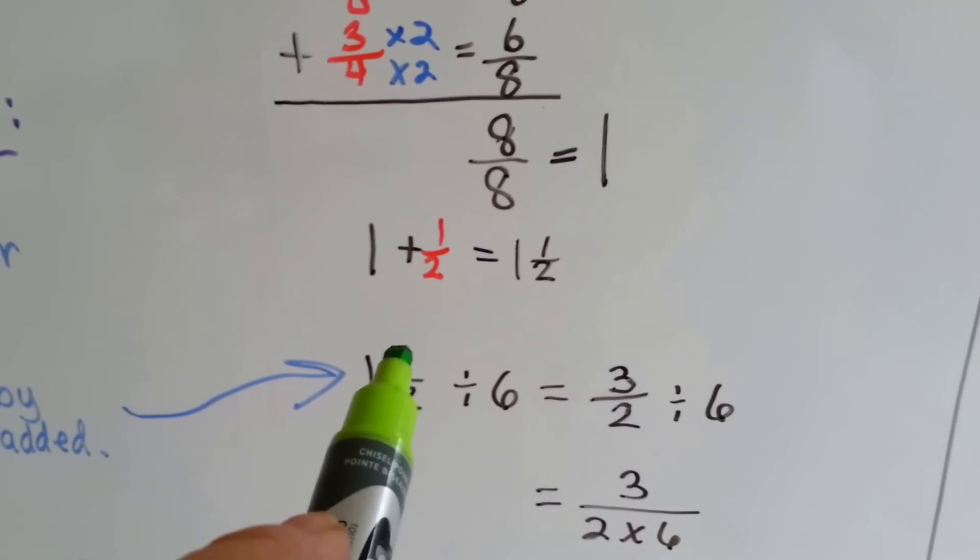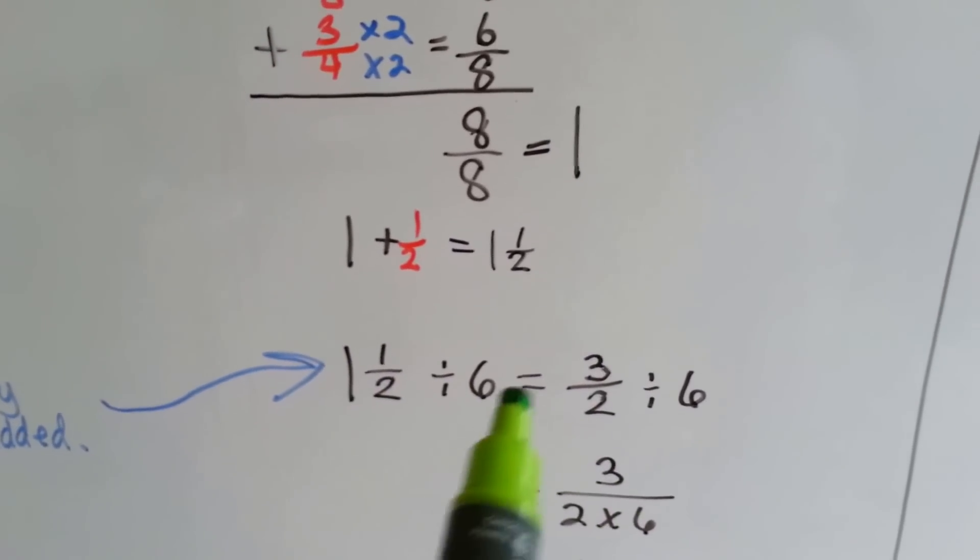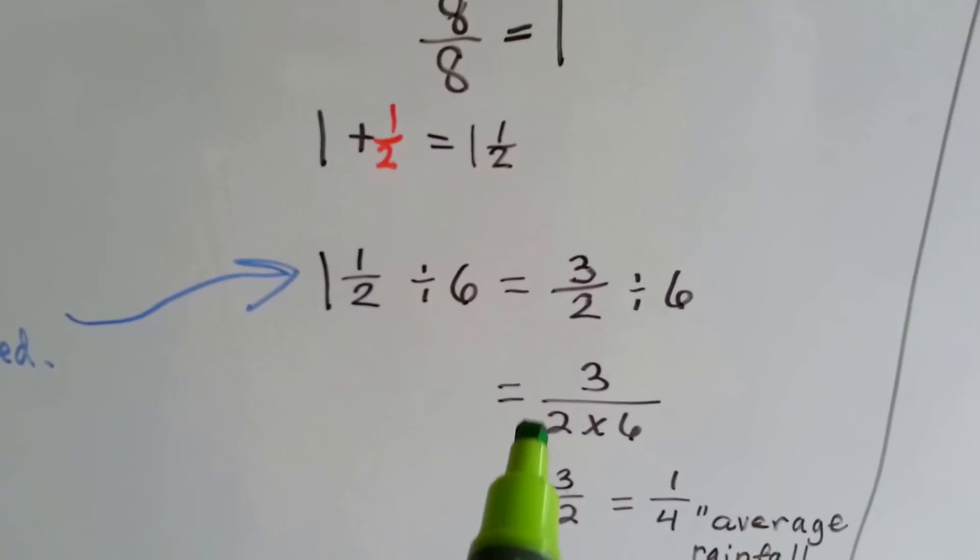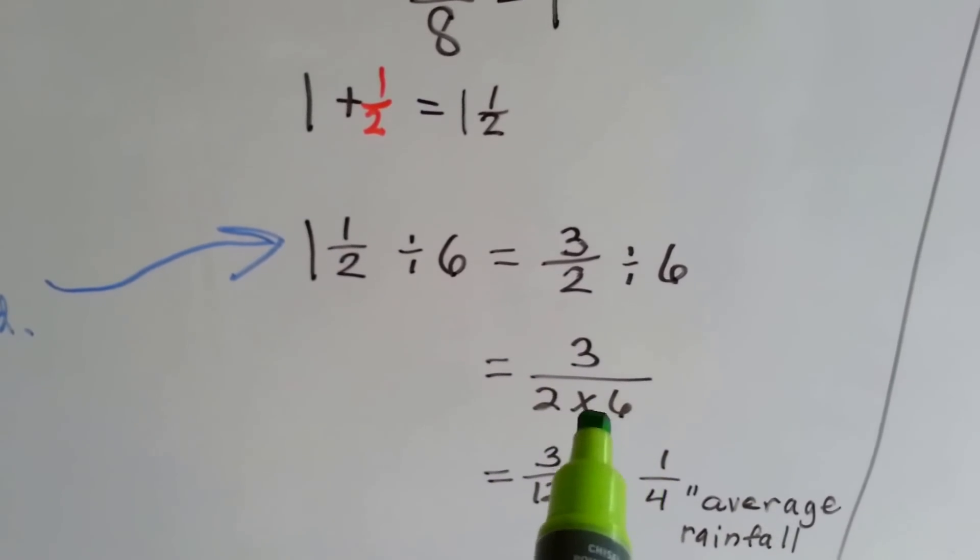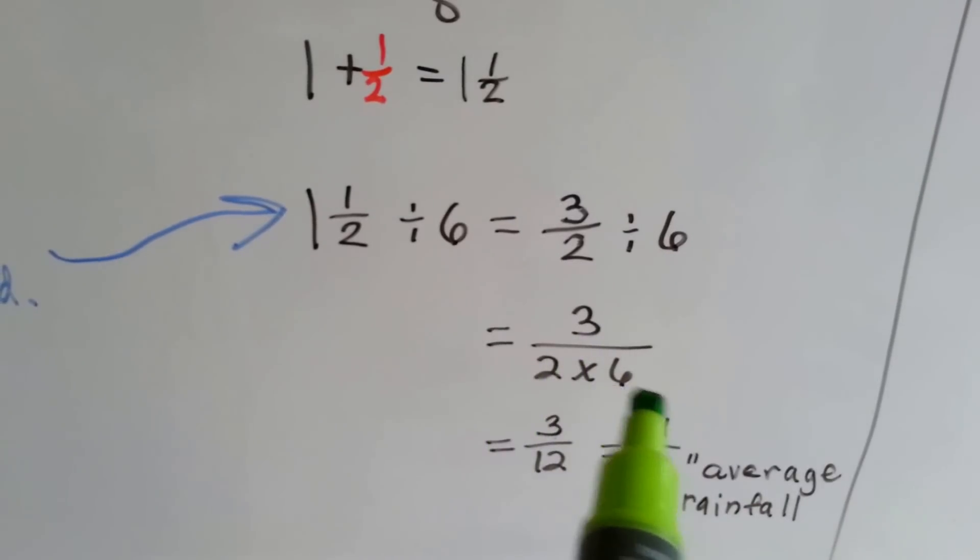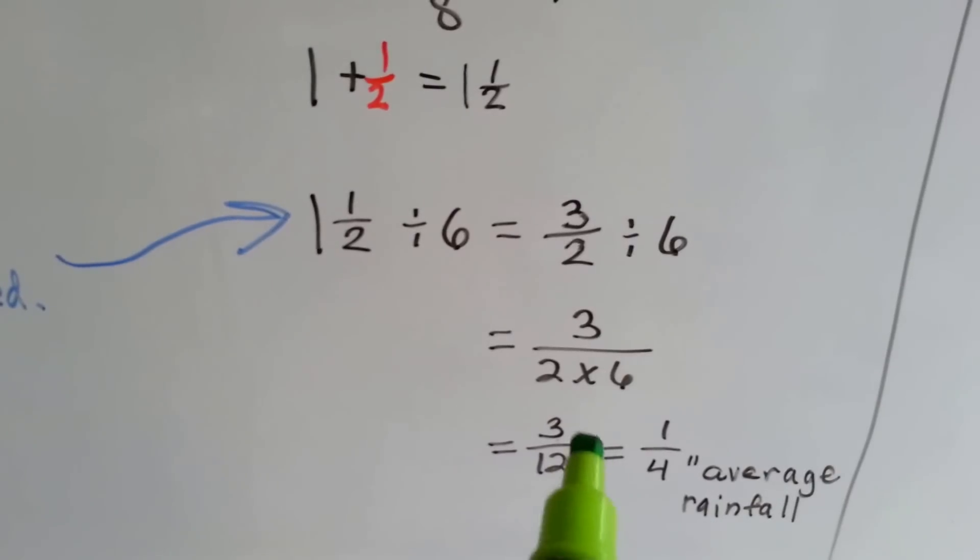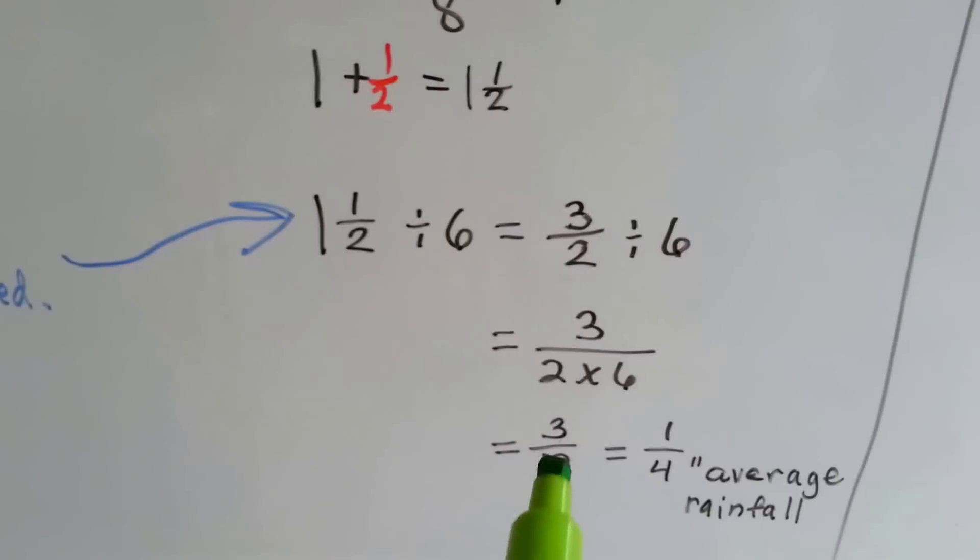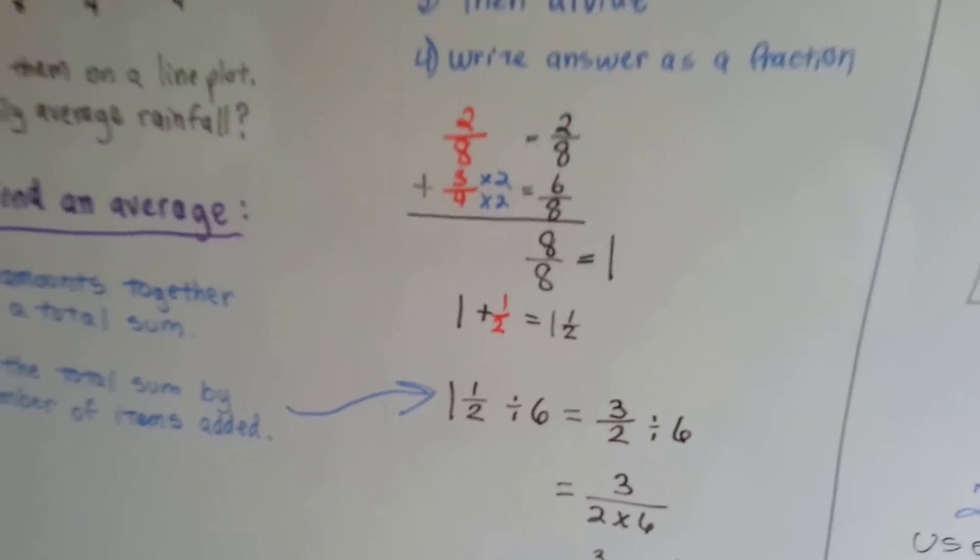What we do is we multiply the whole number times the denominator and add the numerator. So, one times two is two plus the one is three. One and a half is three-halves. Three-halves divided by six is the same thing as three is the numerator over two times six is the denominator. Do you remember that from our last unit? Three over two-six becomes three over twelve and it can each be divided by three. Three divided by three is one. Twelve divided by three is four. We end up with one-fourth inch average rainfall.